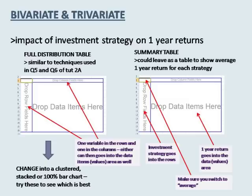For the impact of investment strategy on one-year returns, the first thing to think about is what types of variables we have. One-year return is numerical and investment strategy is categorical. For this mixed bivariate combination, we can use both the rows and columns of a pivot table, making sure that the numerical variable is in groups.